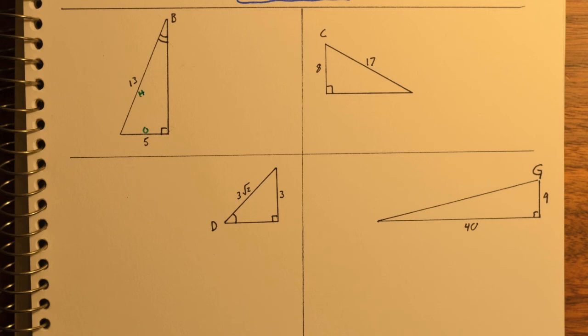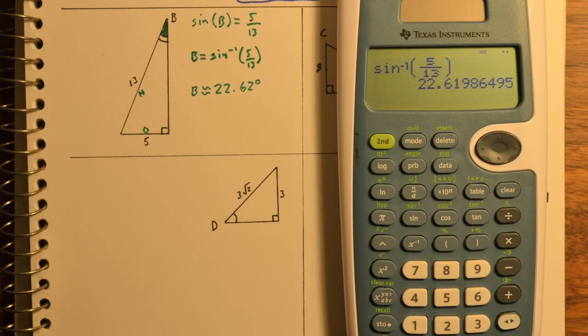Here we have a few more examples. In that first box, we've got angle B is unknown. The opposite, five. The hypotenuse is 13. Opposite and hypotenuse means we'll use the sine function. So the sine of the angle is five-thirteenths, which means the angle is the inverse sine of five-thirteenths. And so we get an angle measure of about 22.62 degrees.